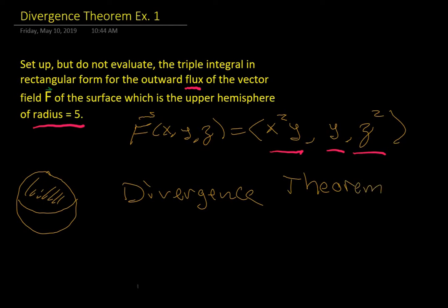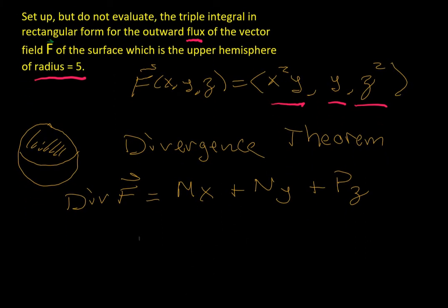So the divergence is a very simple calculation, as you might recall, but pretty weighty in terms of its concept and where it comes from. So it's the first component with respect to x plus the second component with respect to y plus the third component with respect to z, which will be, for this problem, 2xy plus 1 plus 2z.